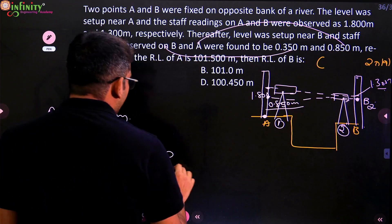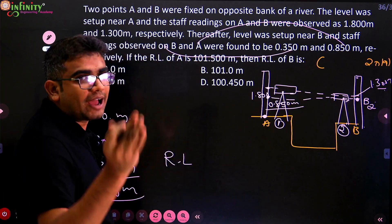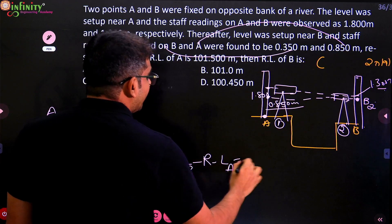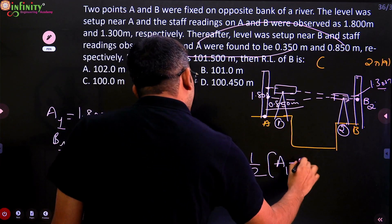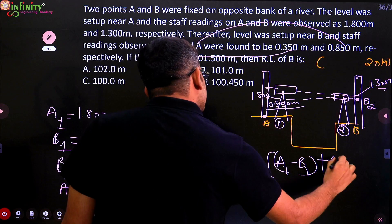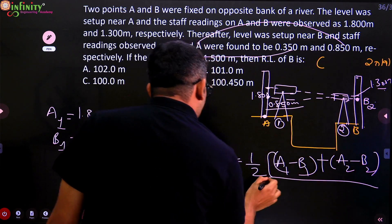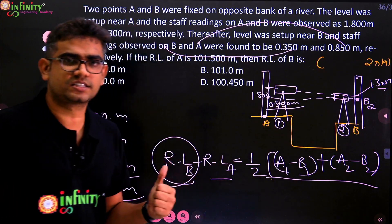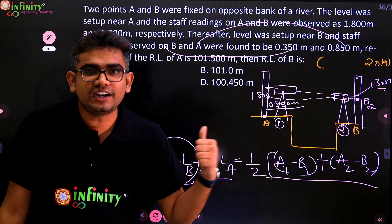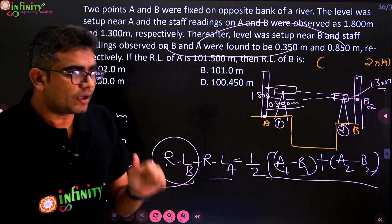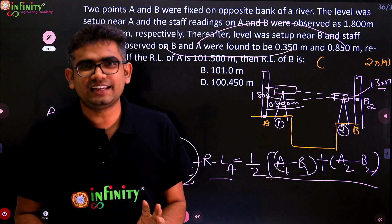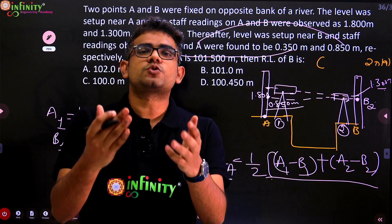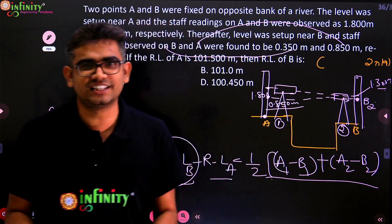Now apply the formula: since we have A and B instead of P and Q, RL of B minus RL of A equals half into A1 minus B1 plus A2 minus B2. All four values are known, and RL of A is also known, so we can calculate RL of B. Like this, you can solve different problems in reciprocal leveling. If you have any doubts, kindly drop a comment and we will try to solve your doubt. Thank you for watching this video.